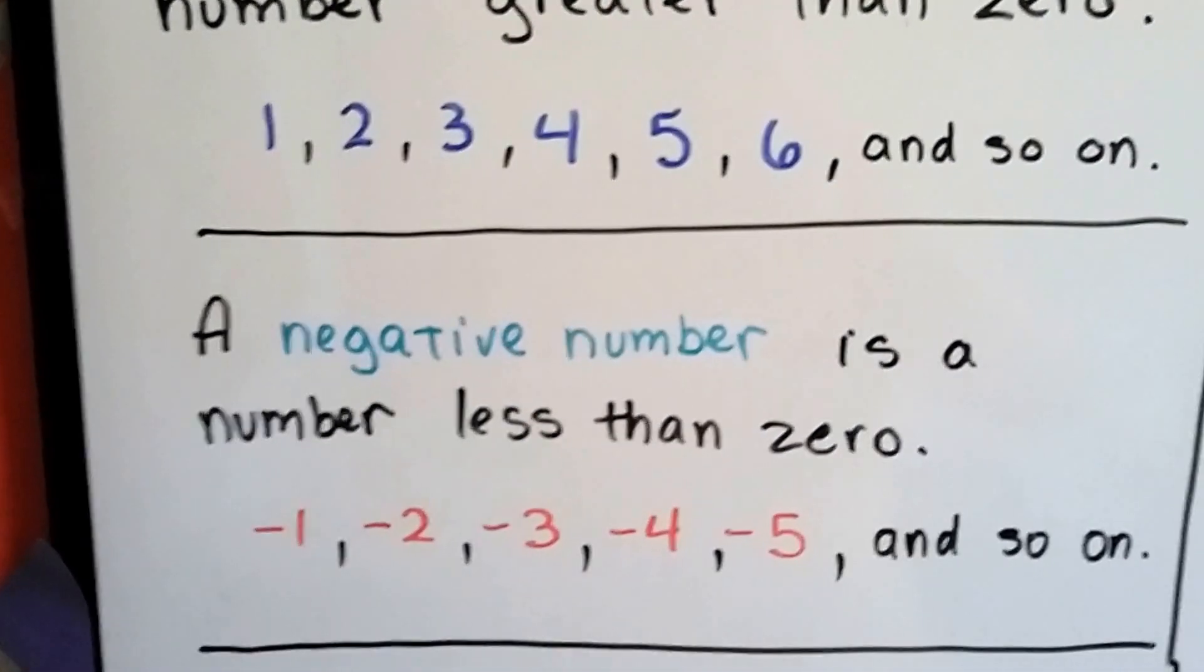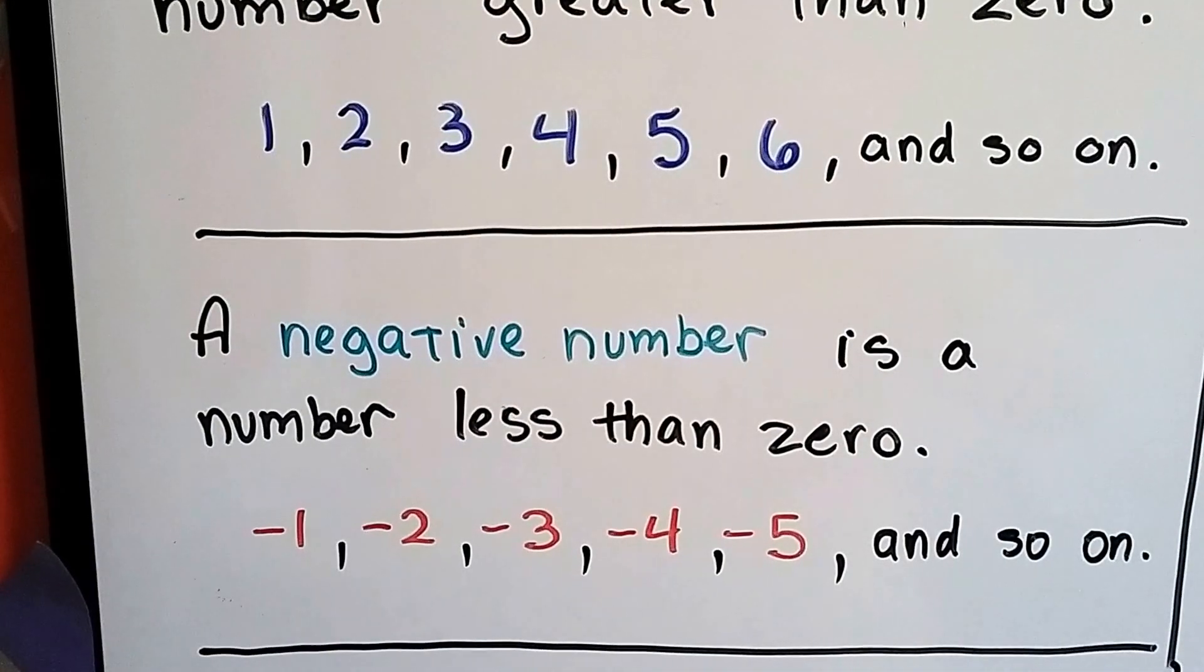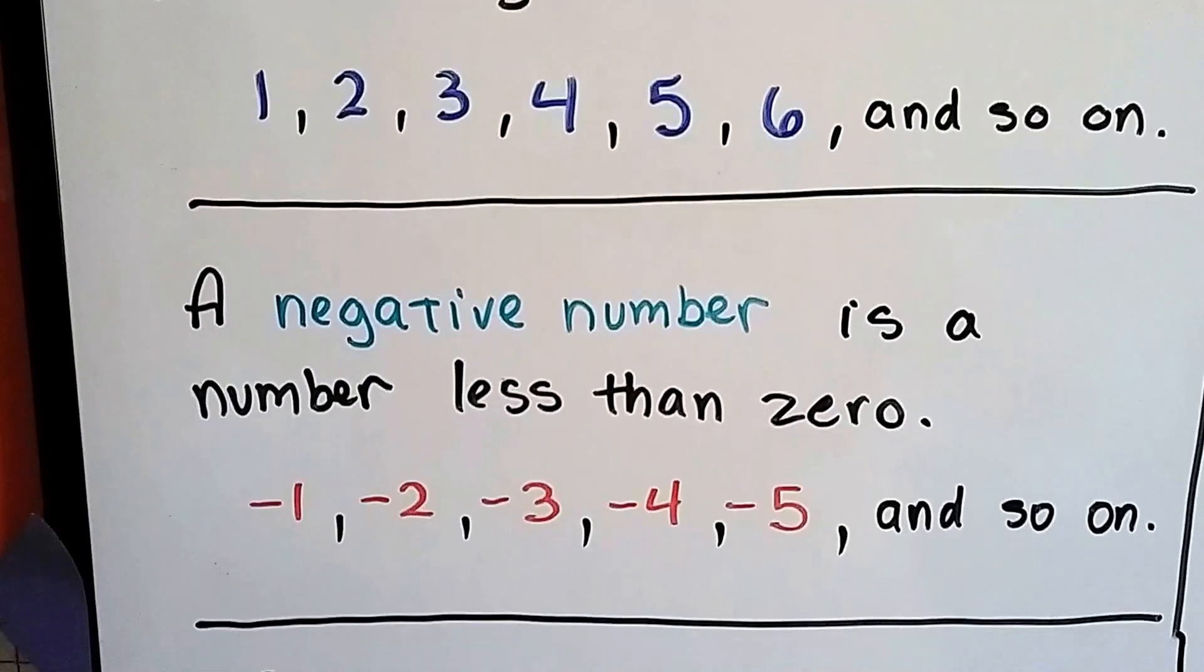A negative number is less than zero. Negative one, negative two, negative three, negative four, negative five, and so on.